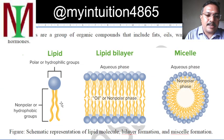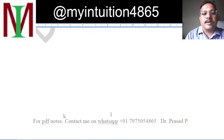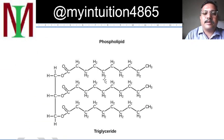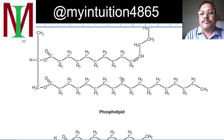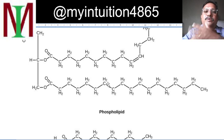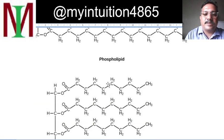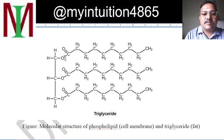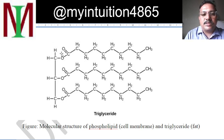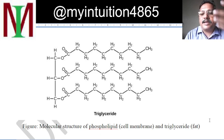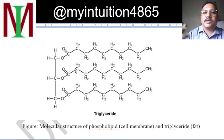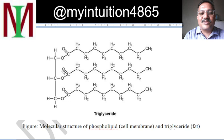This is represented with a head and two tails. Now, this is a triglyceride — the glycerol part (CH2OH, CH2OH, CH2OH) connected to long-chain hydrocarbons. Phospholipids mainly form the cell membrane, even the skin layers. A triglyceride is what we call fat — when someone is very fat, it means too many of these triglyceride molecules are present in their body.